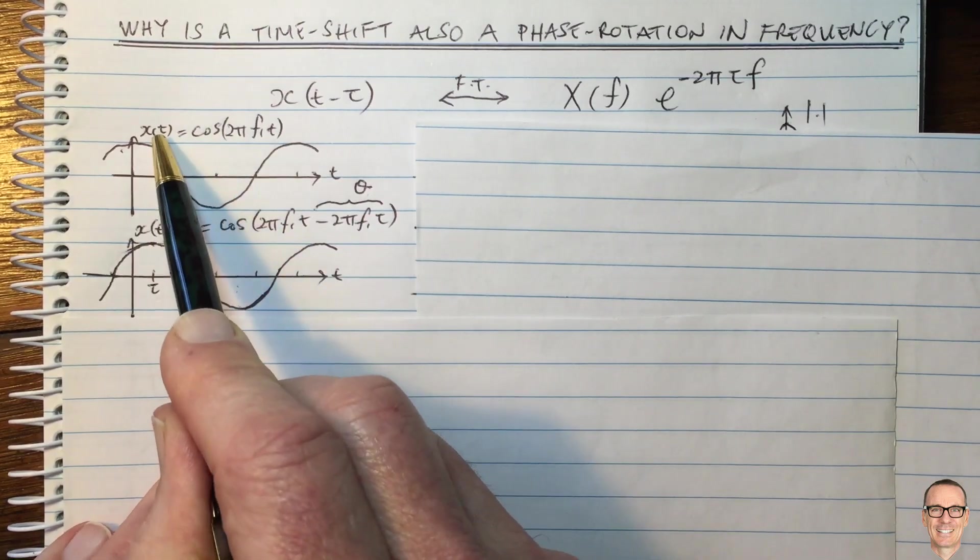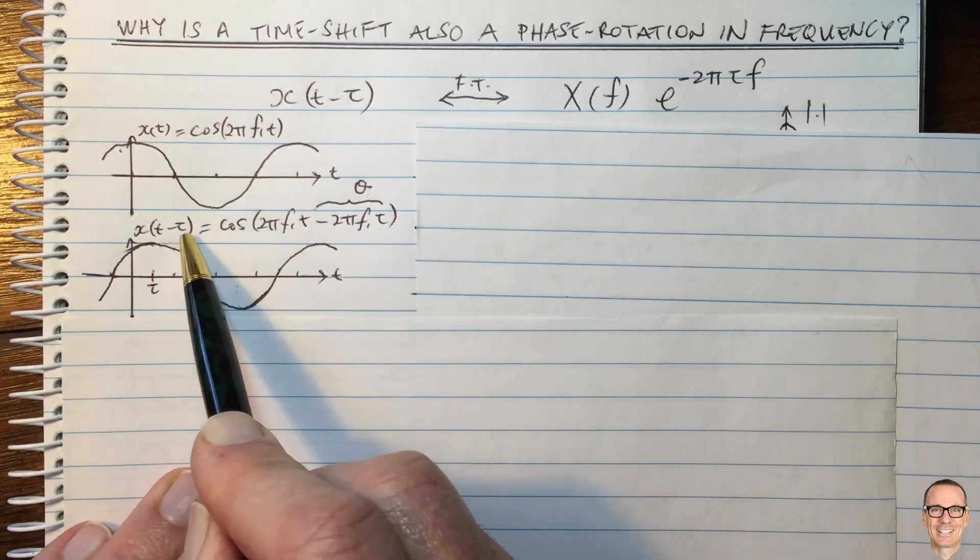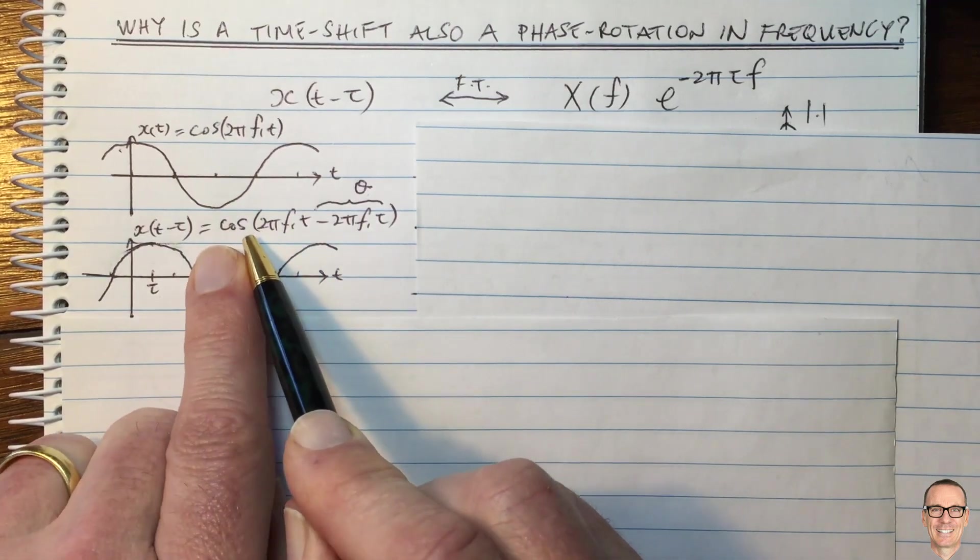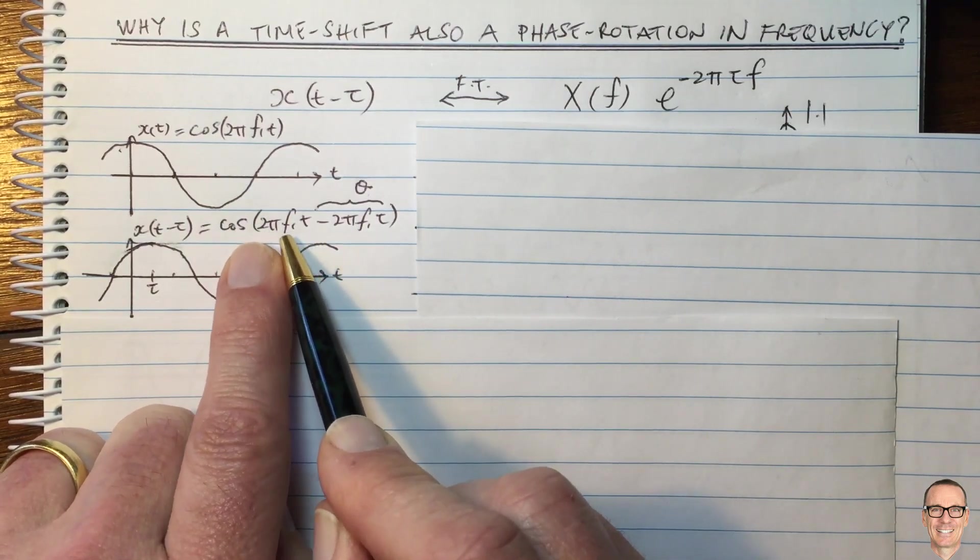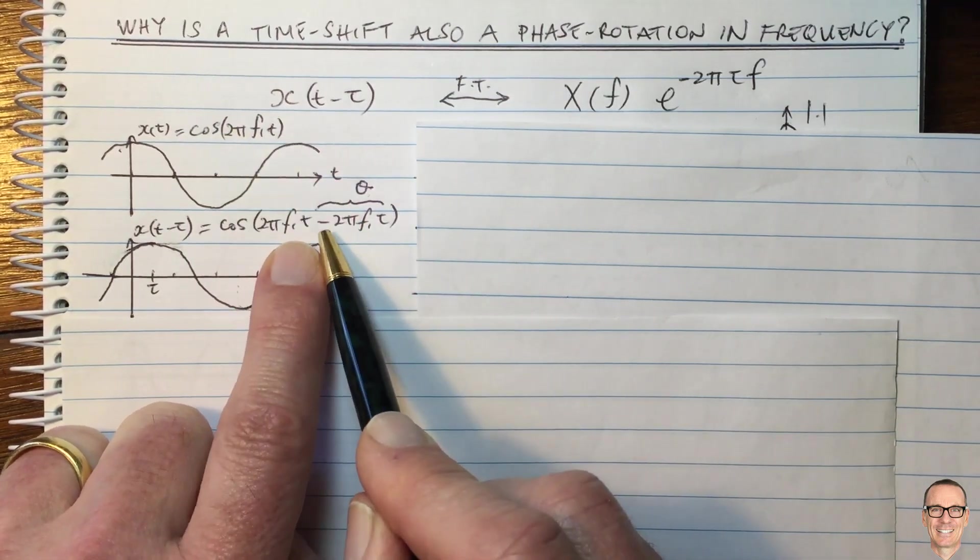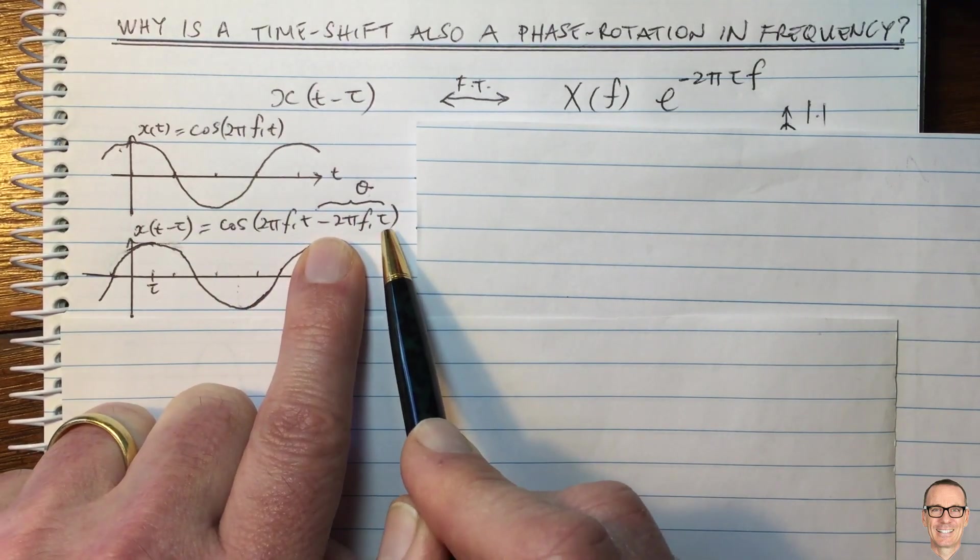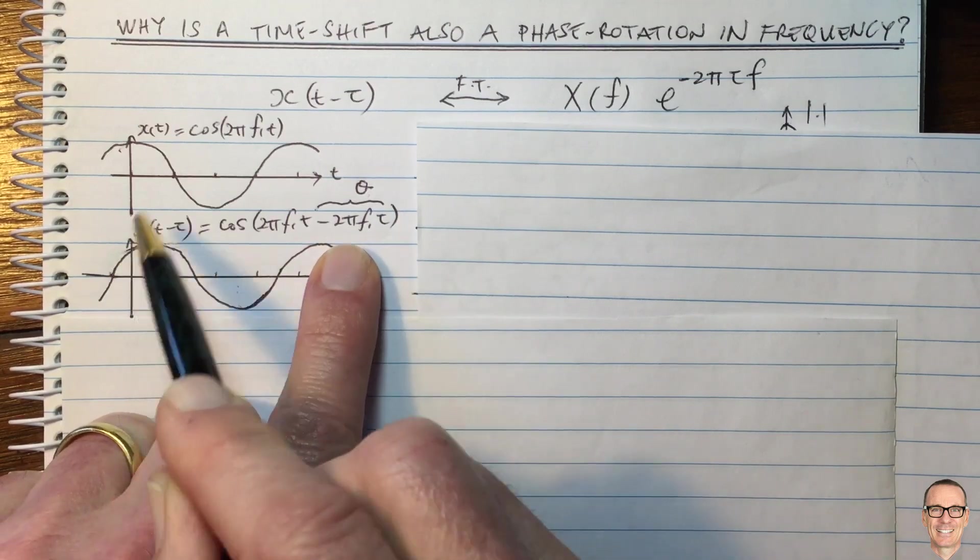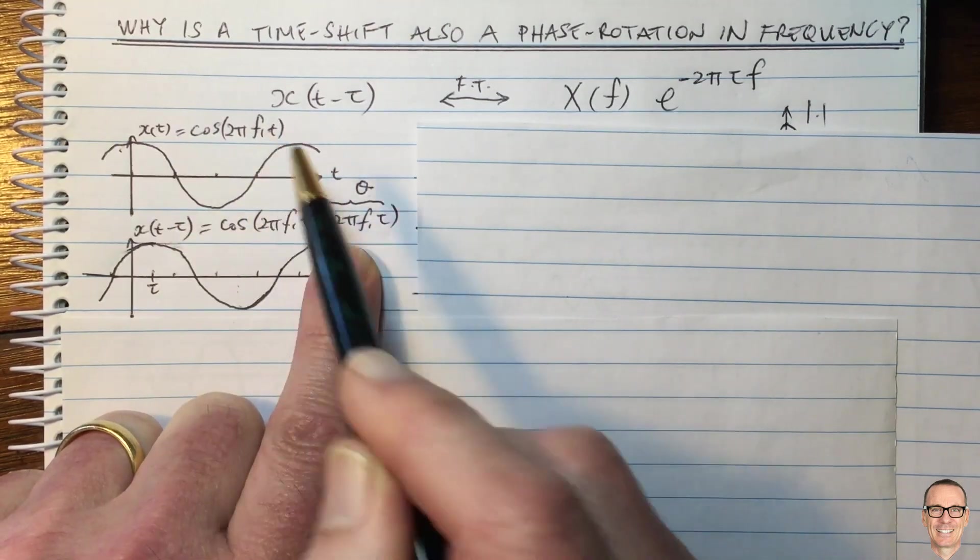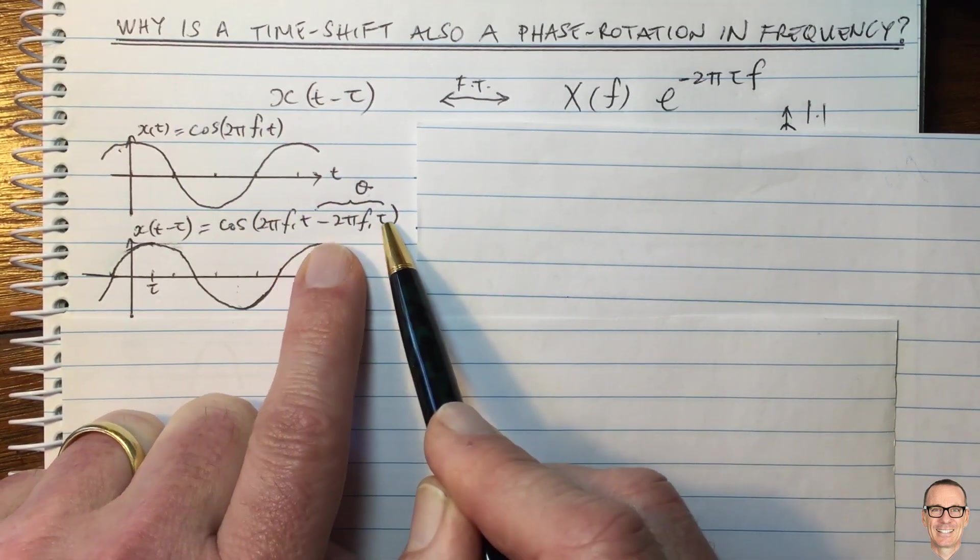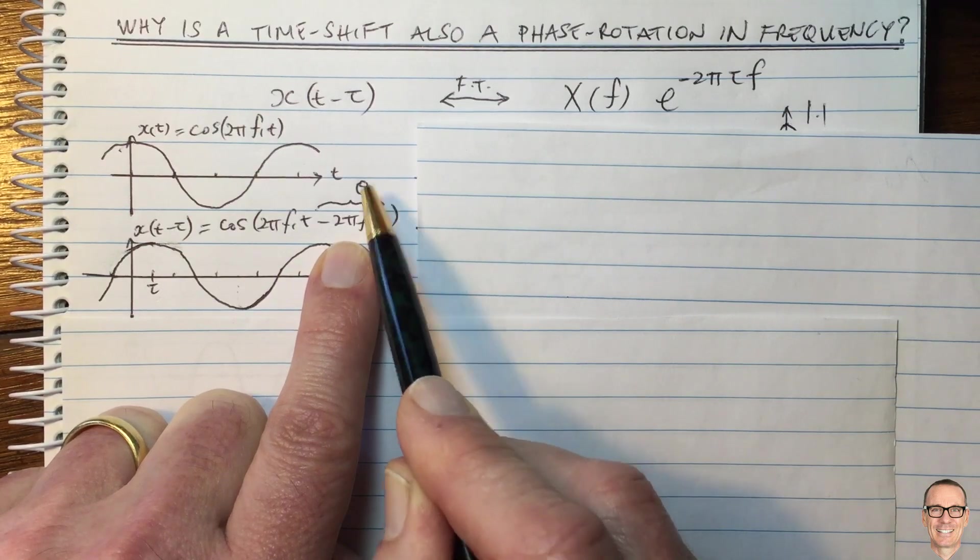And if we're in the equation, we replace T by T minus Tor. Then we can see we get the cos of 2 pi F1 T, same as here, minus this component here, which comes about from the Tor. And you can see that for this waveform, it only has one frequency, F1. So this is a constant term. It is a constant phase.